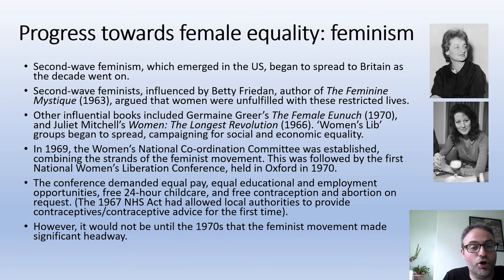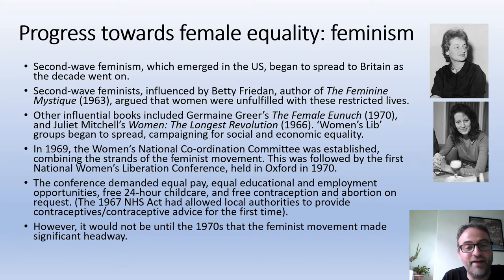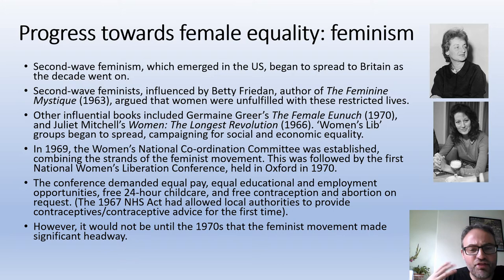More evidence of the growing feminist movement: in 1969 the Women's National Coordination Committee was set up, trying to combine different groups of feminists together. The women's lib movement was very strong by 1970, and in Oxford the first British National Women's Liberation Conference was held.